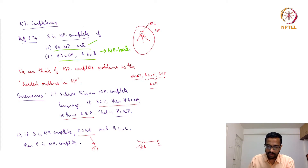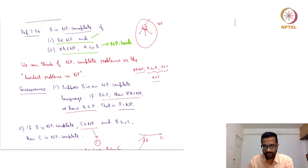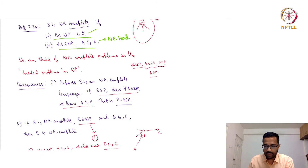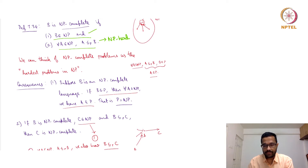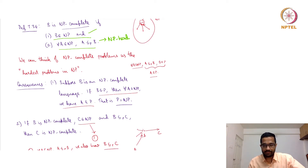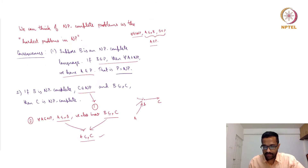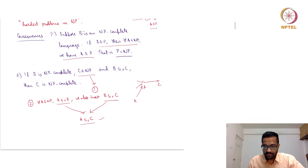Another point: NP-complete problems can be thought of as the hardest problems in NP, because once you show one of them is solvable in polynomial time, all of NP is contained in polynomial time. If B is NP-complete and B is in P, then P equals NP.